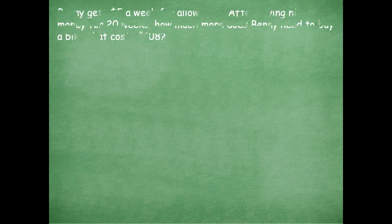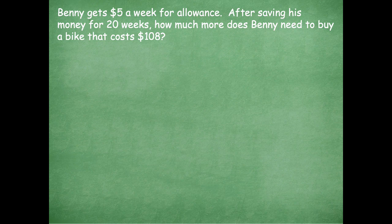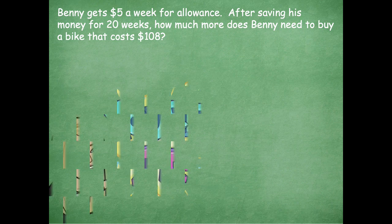Let's take a look at another one. Benny gets $5 a week for allowance. After saving his money for 20 weeks, how much more does Benny need to buy a bike that costs $108? Remember, we're talking about two-step problems. We need to find out how much money he saved, and then how much more he still needs to buy the bike that costs $108. Those are your two steps. Use the RDW process to solve, then click play when you're ready to go over it together.